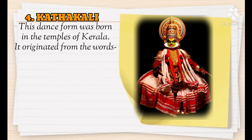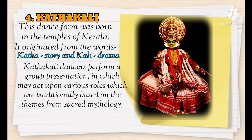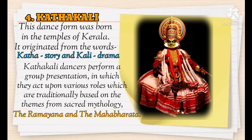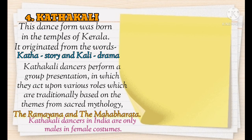Kathakali was born in the temples of Kerala. The word 'Katha' means story and 'Kali' means drama. Kathakali dancers perform a group presentation in which they act out various roles traditionally based on themes from sacred mythology — especially the two epics of India, the Ramayana and the Mahabharata. Notably, Kathakali dancers are traditionally only males, performing in female costumes as needed.